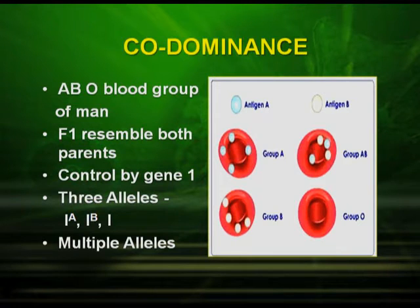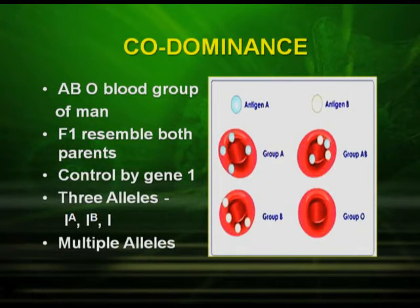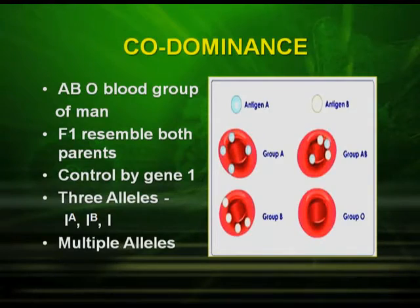Now let us study a very interesting phenomenon called co-dominance. Initially, in incomplete dominance, the red color was not completely dominant over the white and we got an intermediate color. But in co-dominance — a genetic mechanism which operates in the ABO blood group in humans — the F1 resembles both parents, meaning both have equal share. It is controlled by a gene with three alleles: IA, IB, and i. This particular character has three alleles instead of two, so it is a case of multiple allelism. In co-dominance, both dominant alleles share equally and produce a new phenotype — both express themselves.